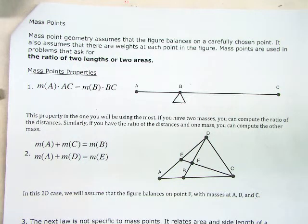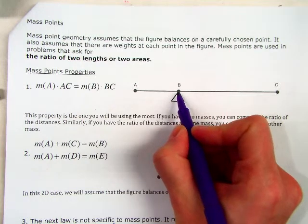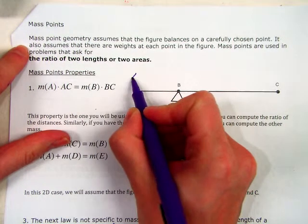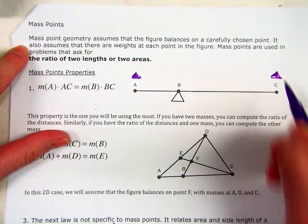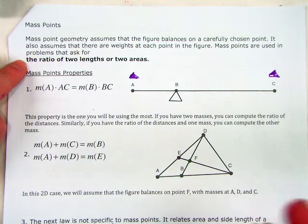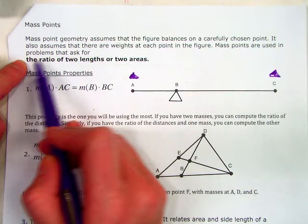All right, mass points in geometry assumes that the figure balances carefully on a carefully chosen point. It also assumes that there are weights at each point. So like on here, we could have a weight attached to this and a weight attached to this. This allows you - usually these problems are used in problems that ask for the ratio of two lengths.